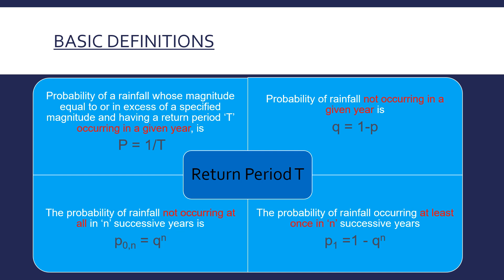The return period: suppose this year we had a rainfall of 50 centimeters, and next year we had 20, 30 centimeters, and so on — and after 10 years we again received 50 centimeters. So this 10 years is the return period. The same 50-centimeter rainfall returned after 10 years. So the return period is the time interval between the successive occurrences of the same rainfall.